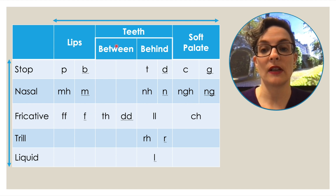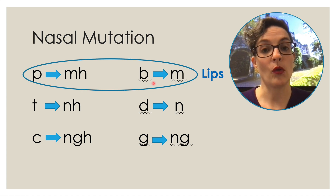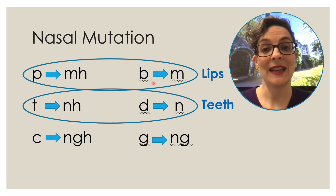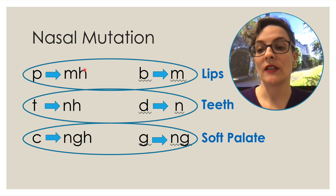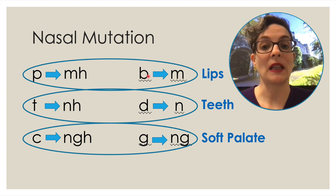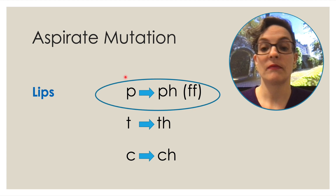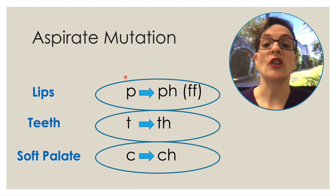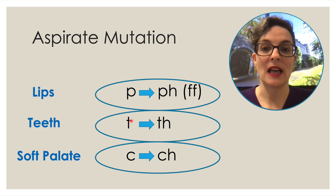Now how do we apply the where dimension to mutations? With nasal mutation — P, B, M are all lips letters; T, D, N are all teeth letters made behind the teeth; K, G, NG are all soft palate. So when you need to do a mutation and you've got a B, as in Bangor, you change it to M — Mangor — because you're changing from a lips letter and keeping it as a lips letter. In aspirate mutation, the same thing is happening: P to F, both lips; T to TH, both teeth; K to CH, both soft palate. You feel which where dimension your letter is in and you keep it in that same area when you make your mutation.